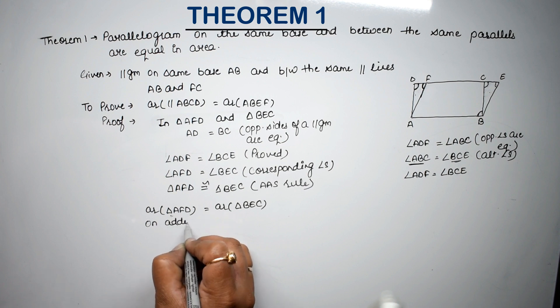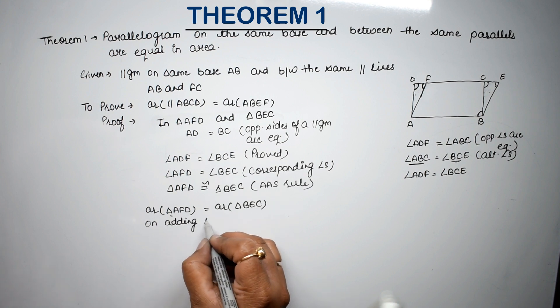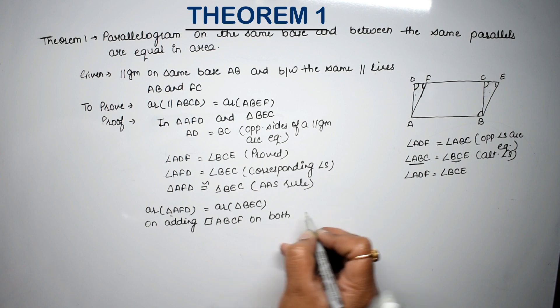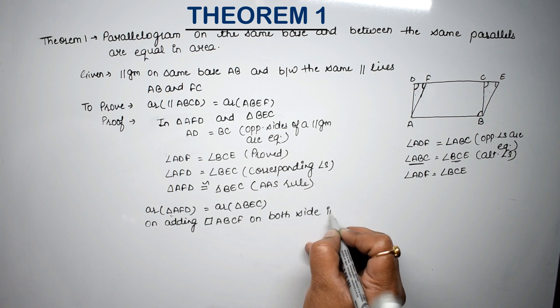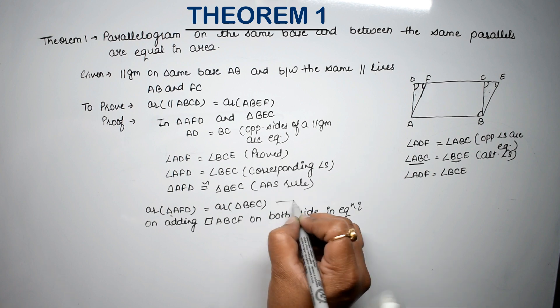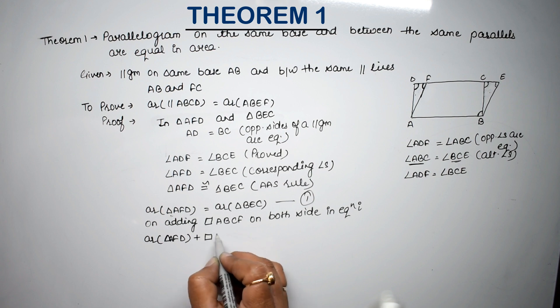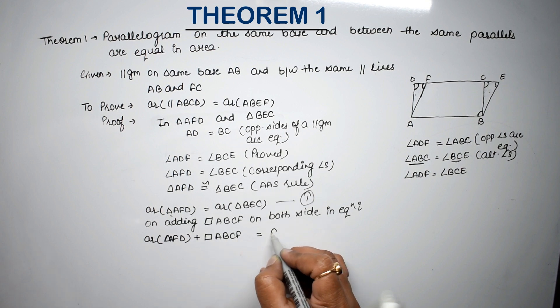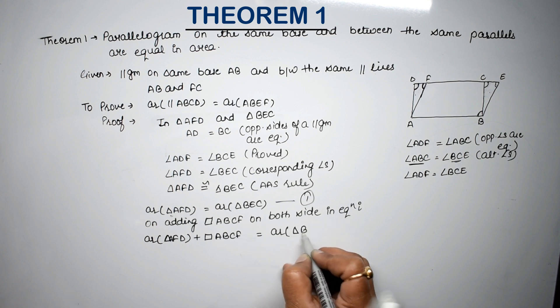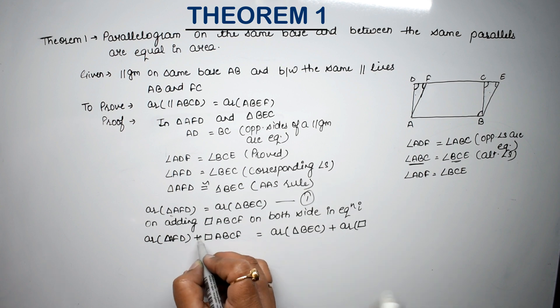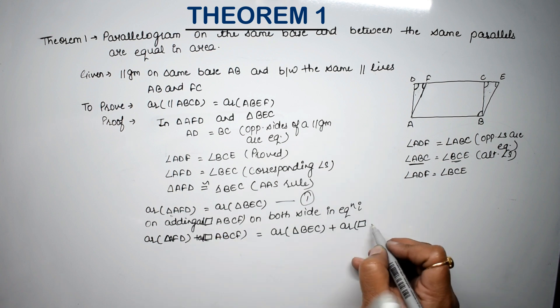So on adding quadrilateral ABCF on both sides. Add on both sides to equation first. Equation first, we take this as one. Right friends? So what do we get? Area of triangle AFD plus quadrilateral ABCF is equal to area of triangle BEC plus area of quadrilateral ABCF.